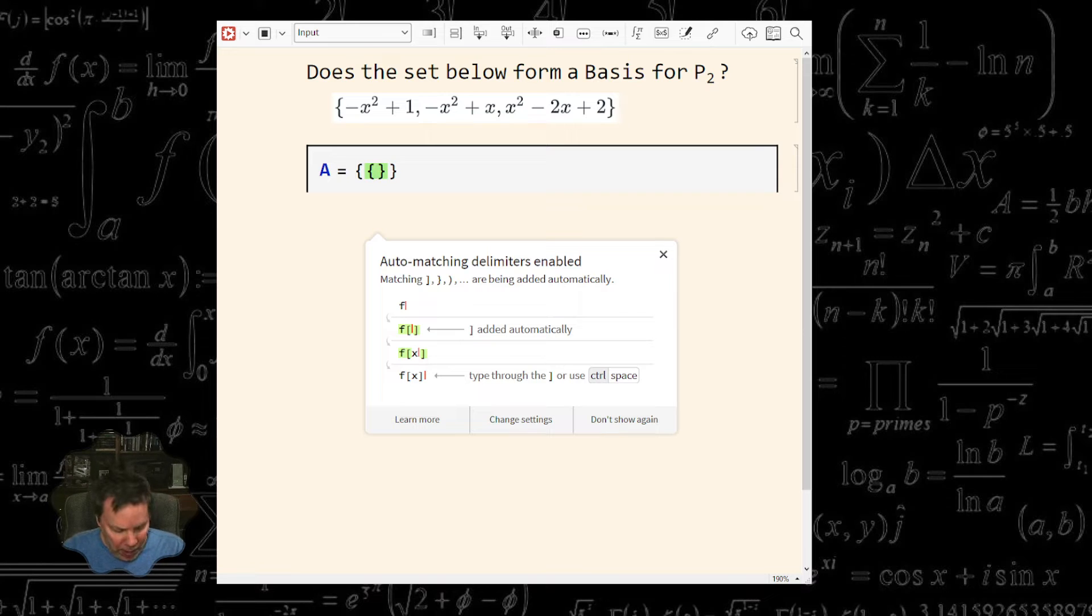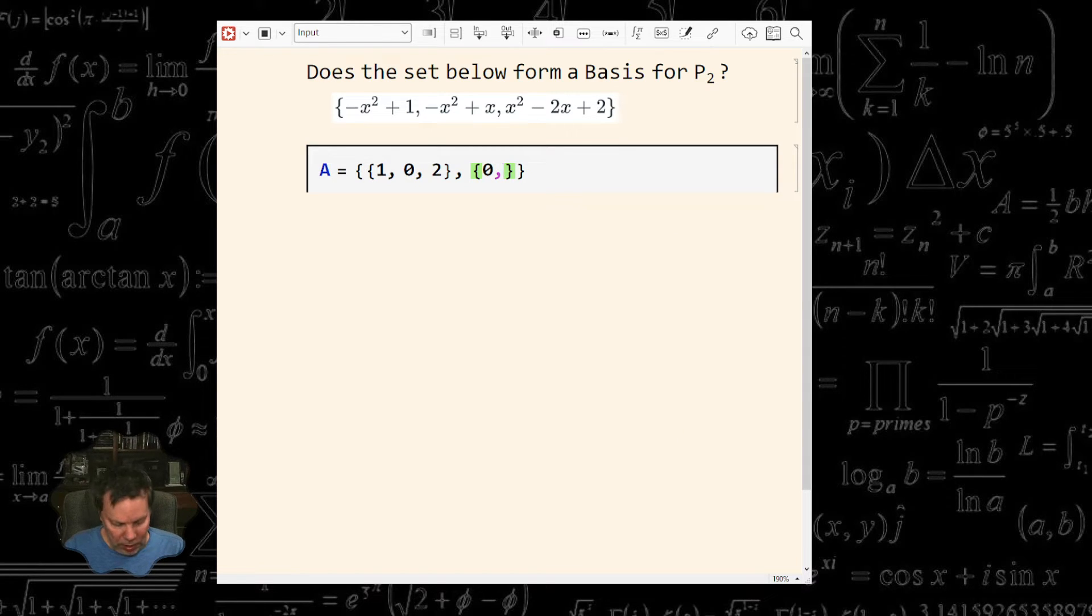So in my first polynomial, I have a coefficient or a constant term of one. My second, I have a constant, zero is my constant term. And then two for my last one. Now, what about my x terms, I have no coefficient, I have a one, and I have a negative two.